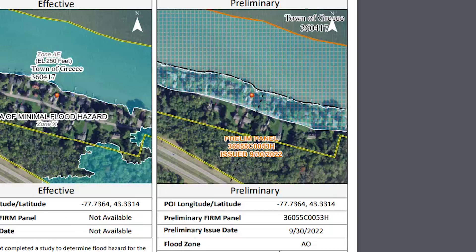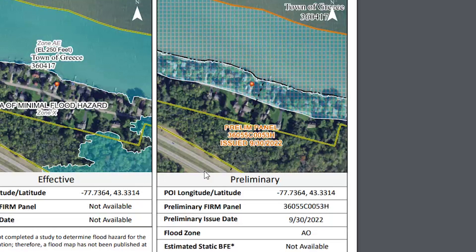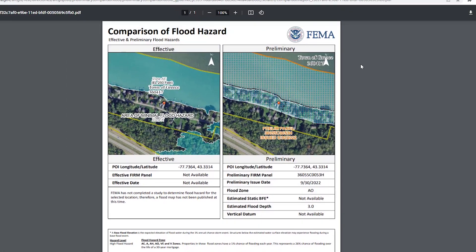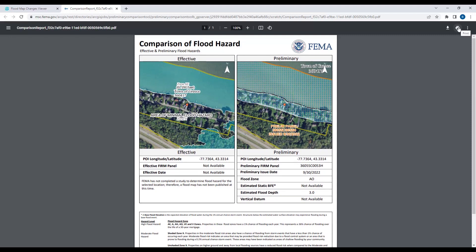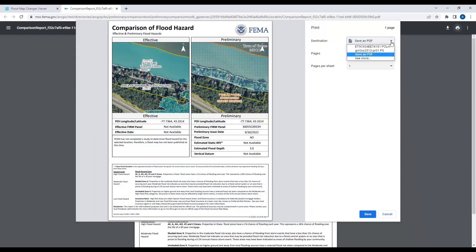Going from Zone X to Zone AO is what I'm potentially going to have to deal with as a homeowner in terms of flood insurance. What you can do here is take this report, print it, and send it to your printer to get a hard copy output.